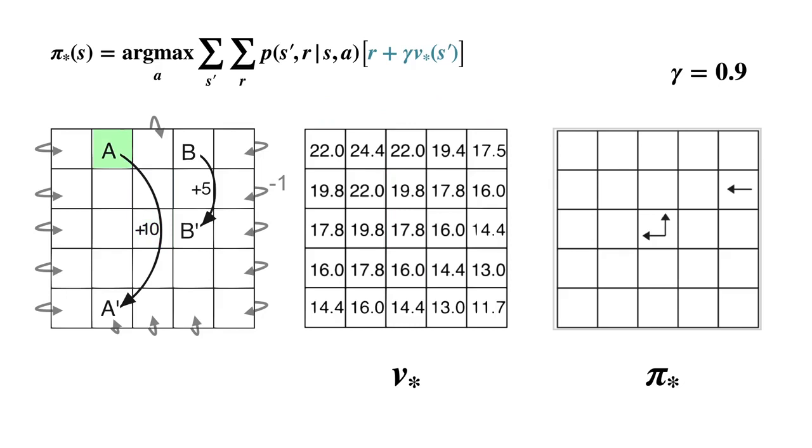As a last example, let's look at state A itself. Remember that regardless of the action we pick in state A, we transition to A-prime with a reward of plus 10. This means that in state A, every action is optimal, since the transitions are equivalent.